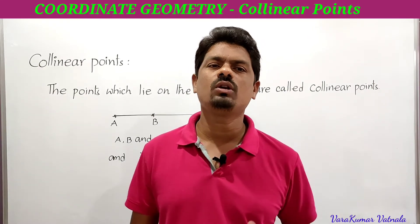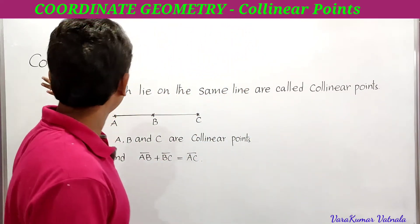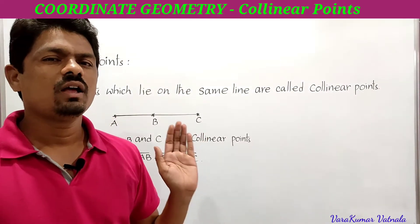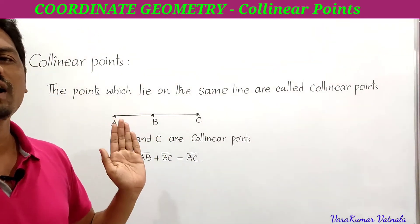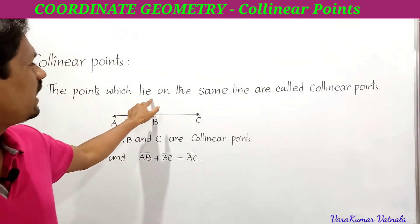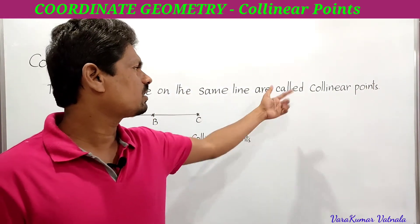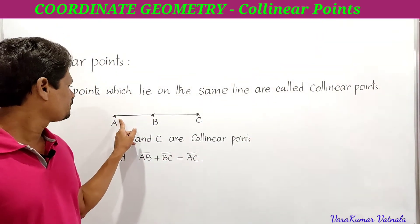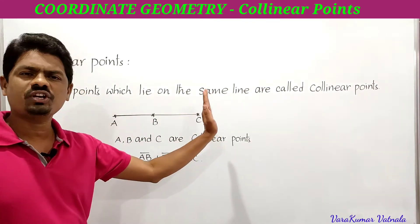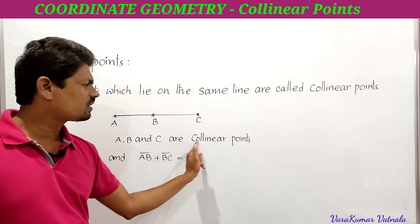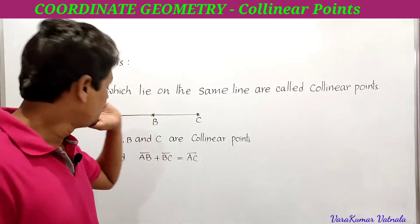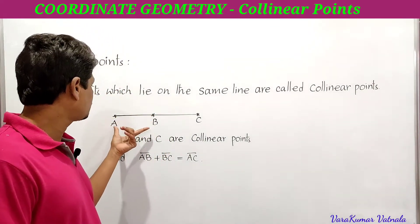Before going to solve the third problem, we have to learn about collinear points. The points which lie on the same line are called collinear points. Here, points A, B, and C are on the same straight line, so A, B, C are called collinear points.